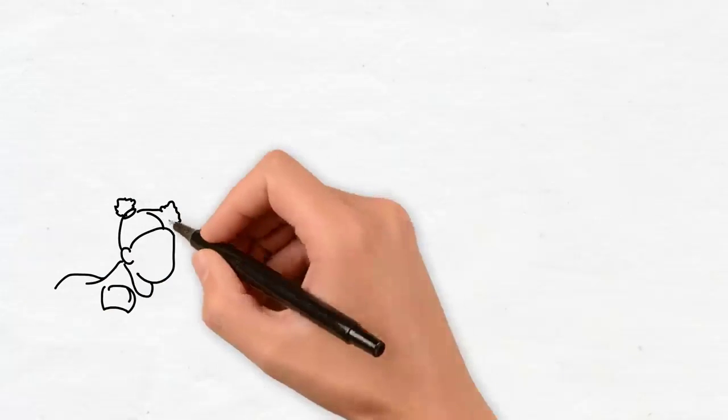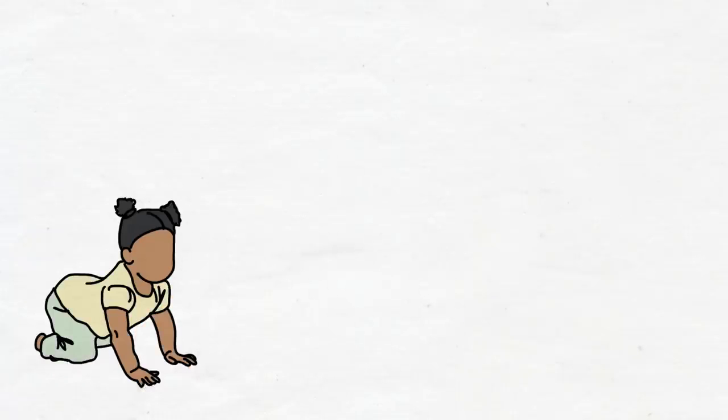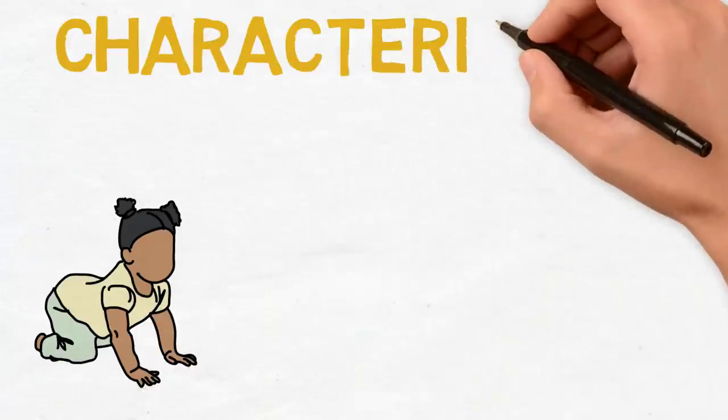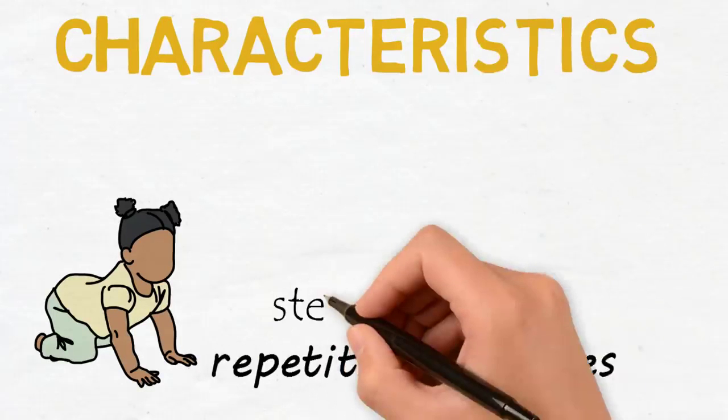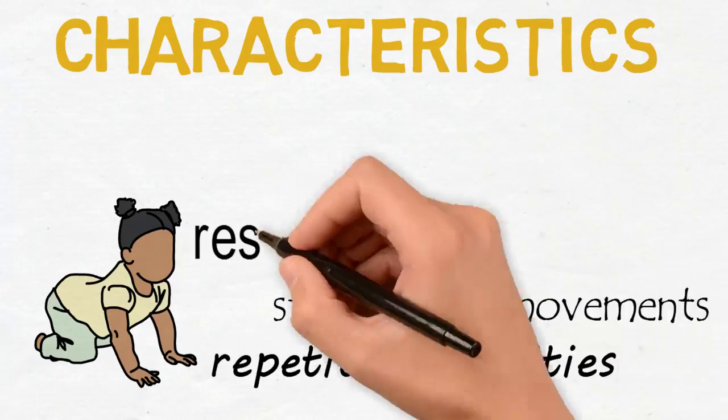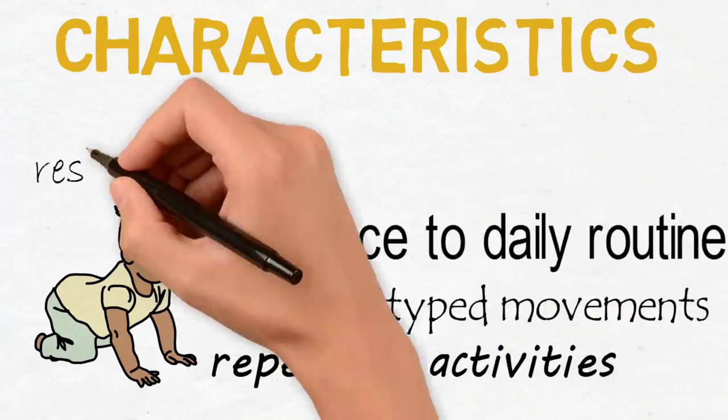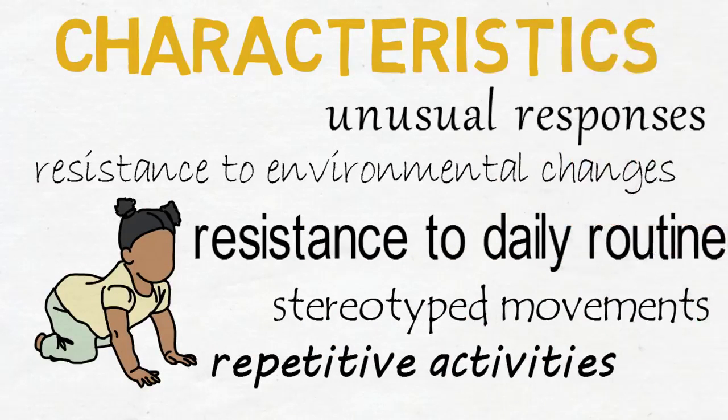According to IDEA 04, ASD is evident when a child is 3 years old or younger. Some other characteristics of ASD include performing repetitive activities, stereotype movements, resistance to daily routine, resistance to environmental changes, and unusual responses to sensory experiences.